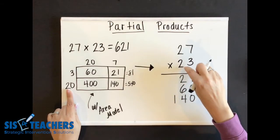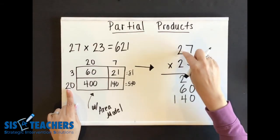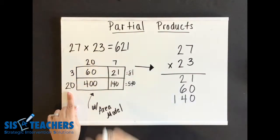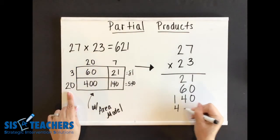So 20 times seven, we know from our previous problem was 140. The last part that we're going to do is two times two, but is it two times two? No, it's 20 times 20. So 20 times 20, as we look at over here, we know totals 400.